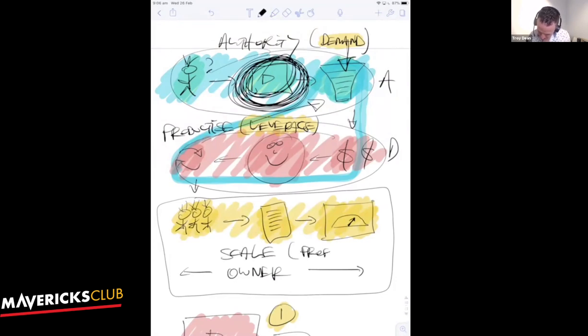And ultimately how you make profit, right? Through team, processes, and your performance, making sure you're tracking your dashboards. So if you build authority, you end up in demand. If you productize, you end up with leverage. And then if you've got team documentation and dashboards, you scale, and that's how you make profit.